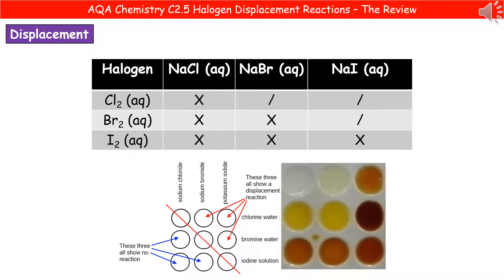Hopefully, in class, you've carried out this experiment. So you have a spotting tile and into your spotting tile, you're going to put a mixture of two solutions into each of the dimples. So you'll have one row of sodium chloride and to that you'd add chlorine water to one, bromine water to the next and iodine solution to the third. Then you do the same thing with sodium bromide and potassium iodide.